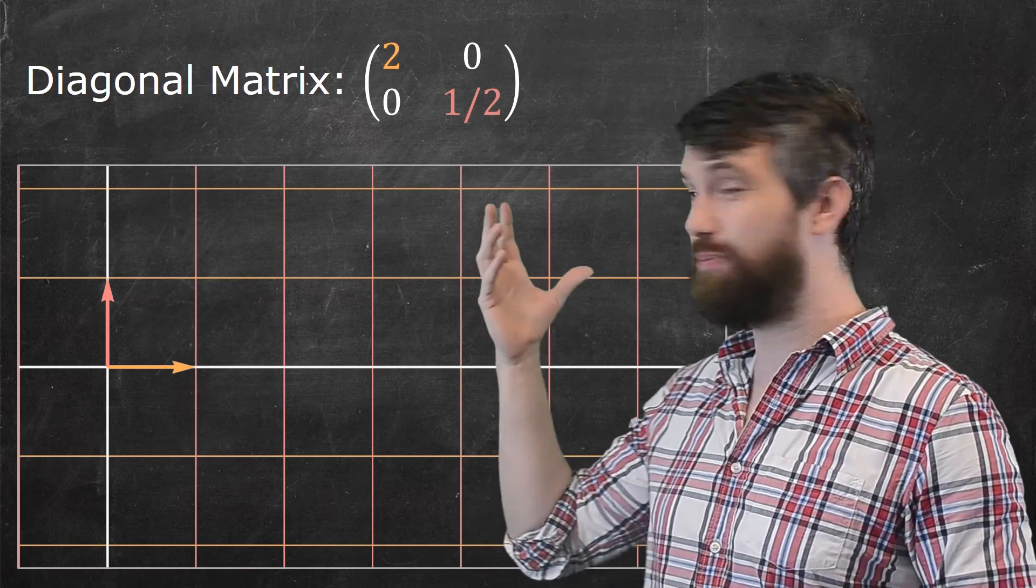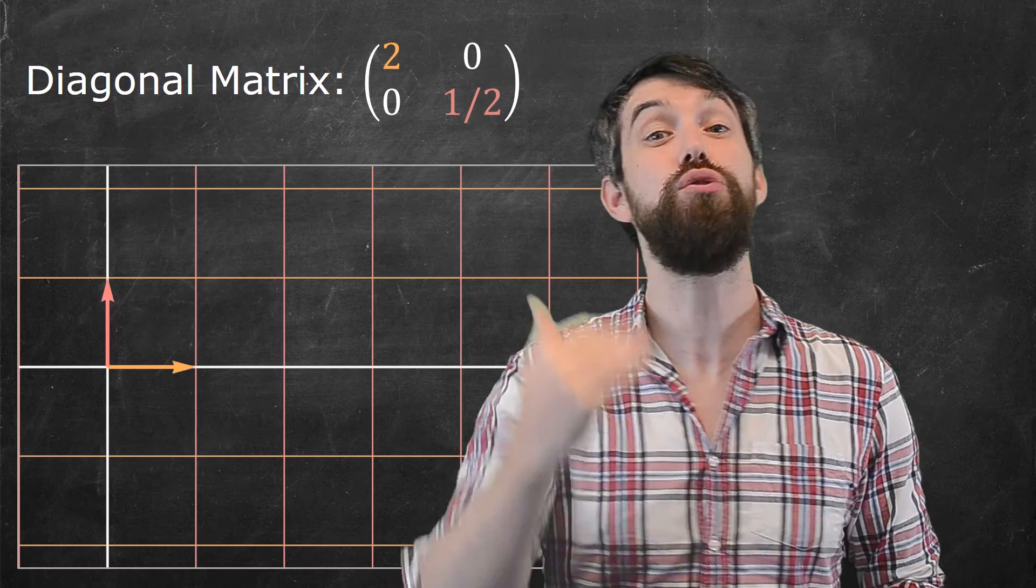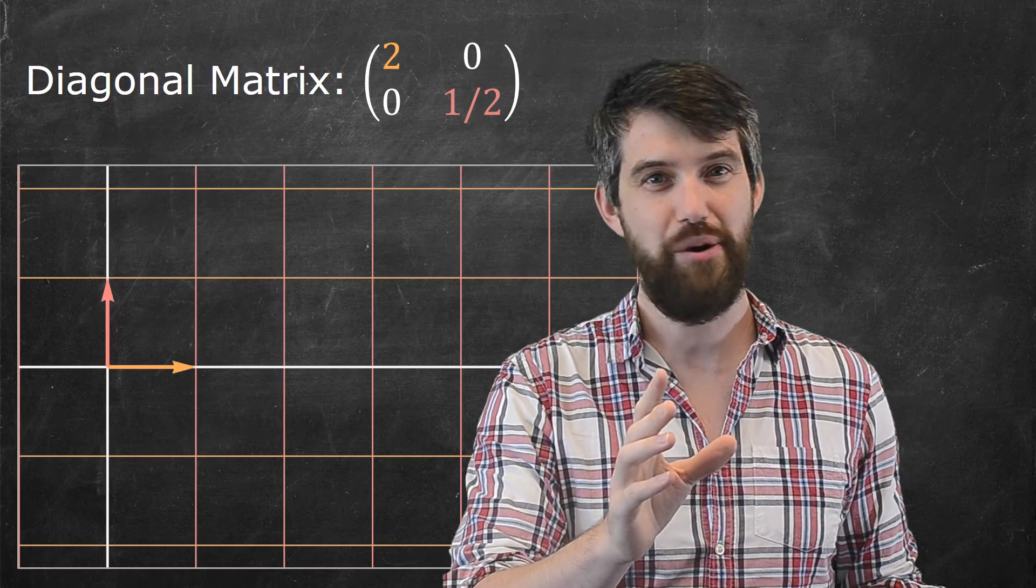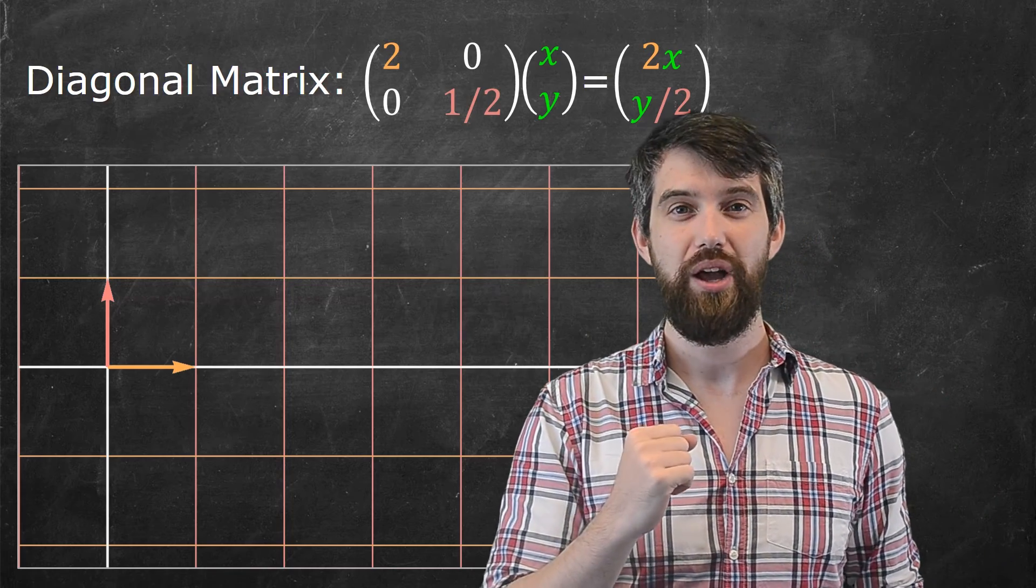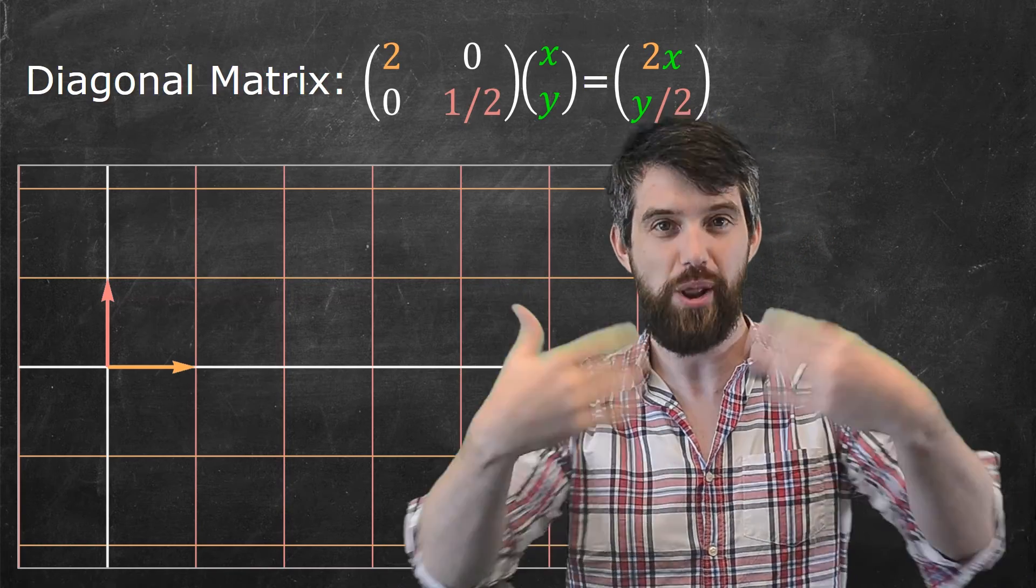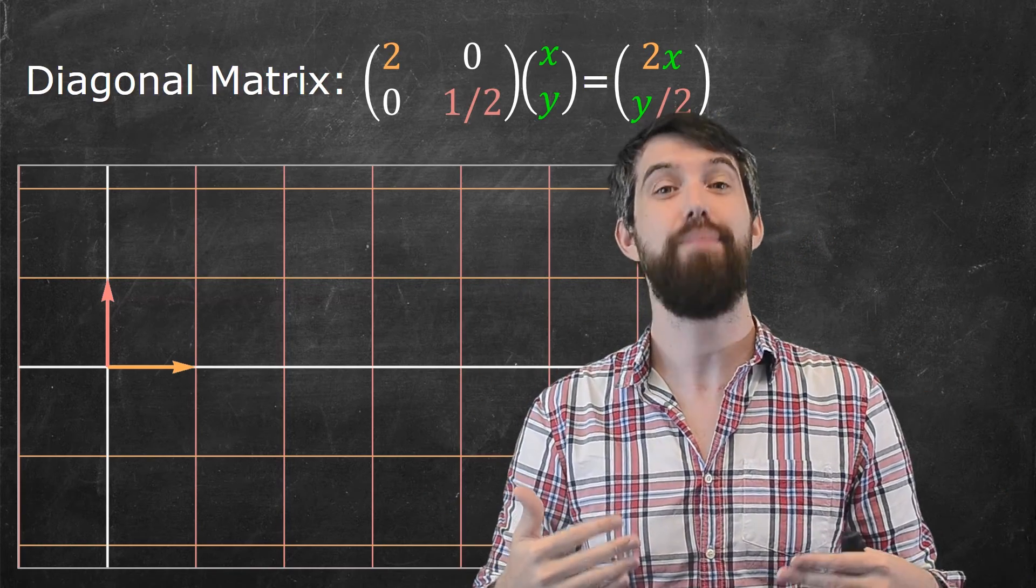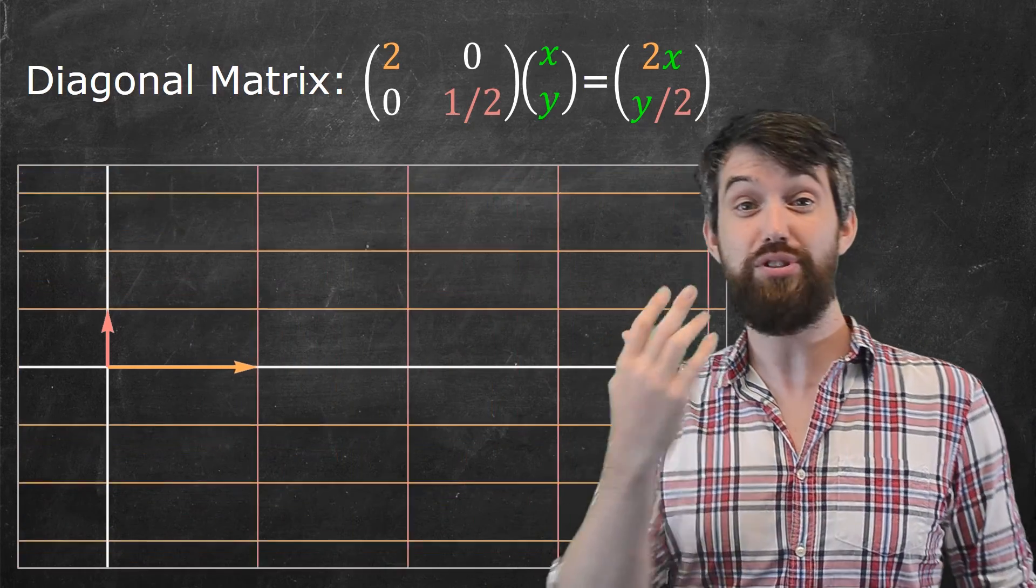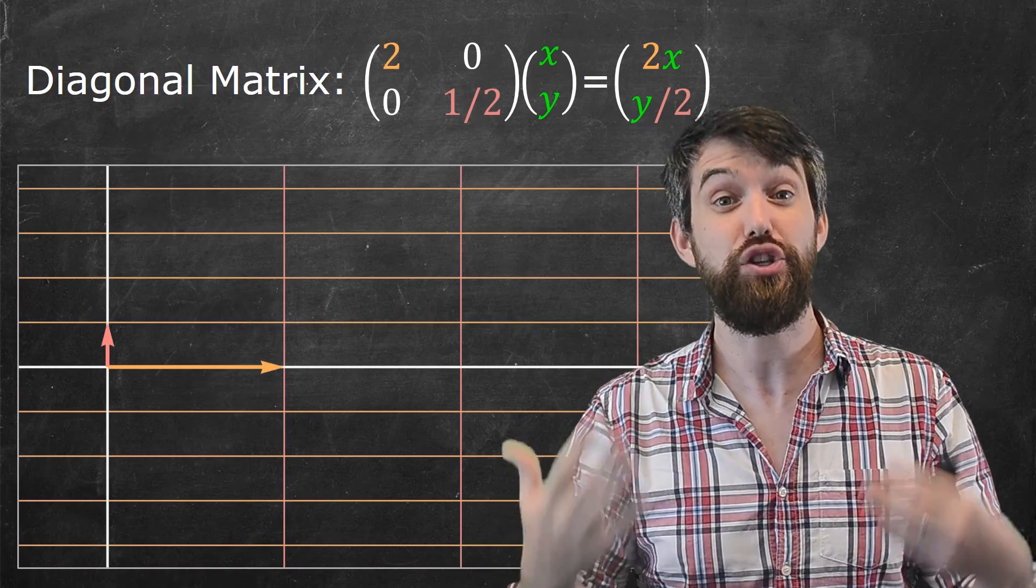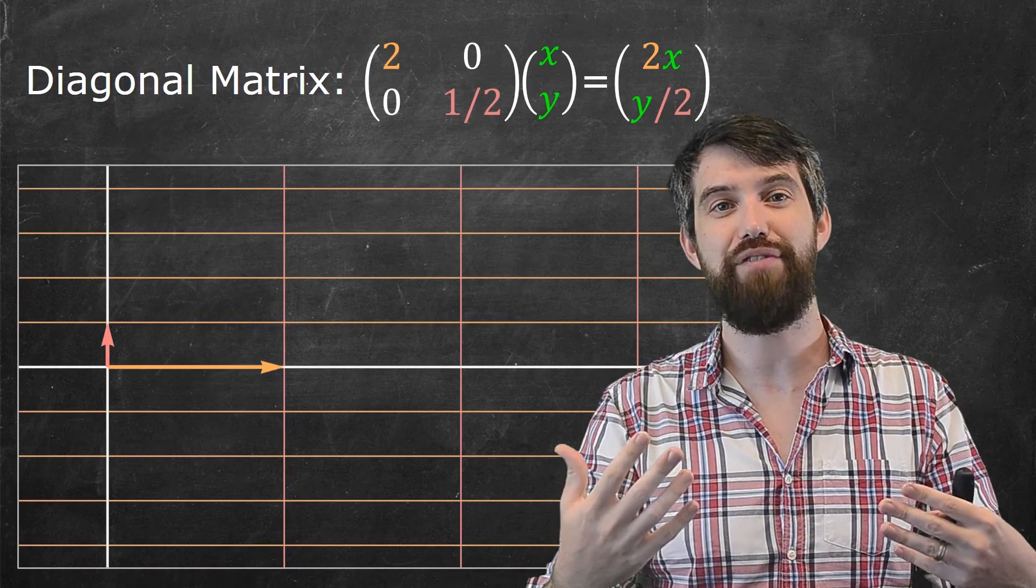So, let's begin here with this specific diagonal matrix, the 2, 0, 0, 1 half. Now, if I take this matrix and multiply it to any particular vector, what it does is it takes the x component and multiplies it by 2, and the y component and multiplies it by 1 half. So, it's going to look like this. And so, I get that kind of stretching of 2 in the horizontal and stretching by 1 half in the vertical.